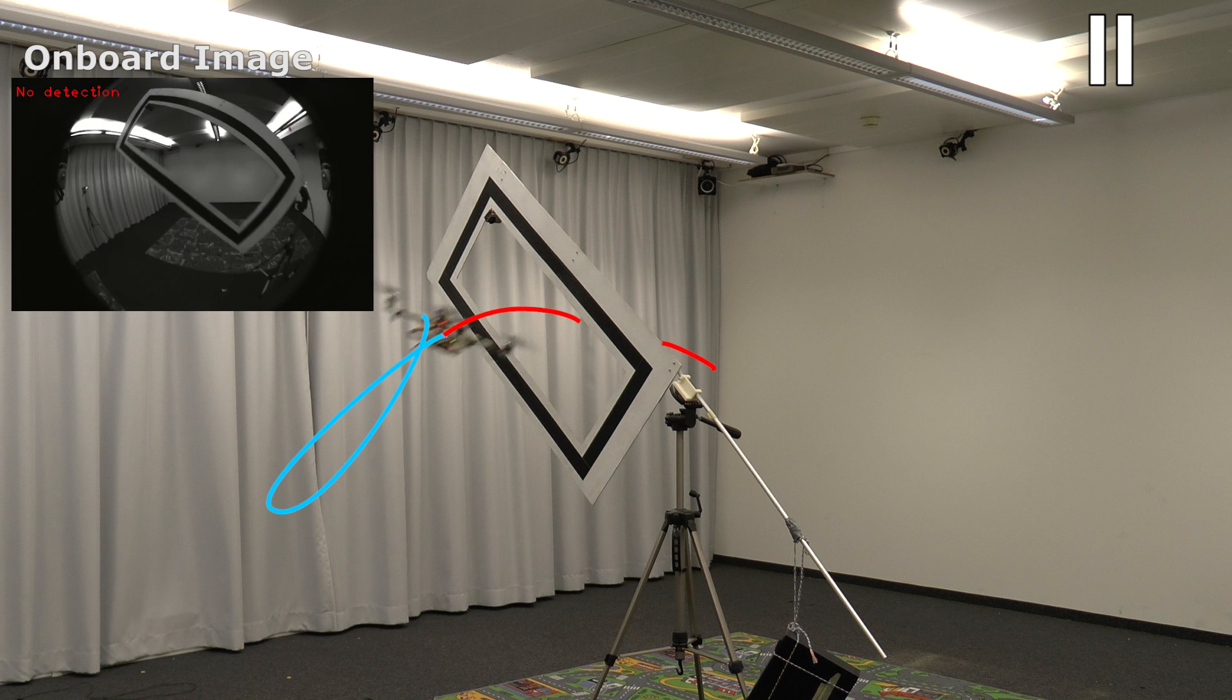During the traverse through the gap, the quadrotor maximizes the distance from the edges of the gap to minimize the risk of collision.